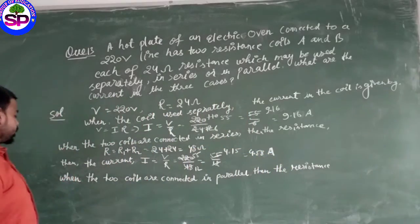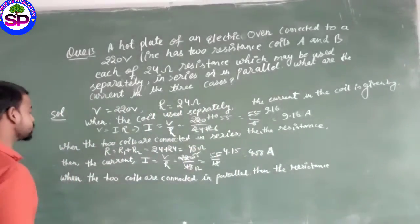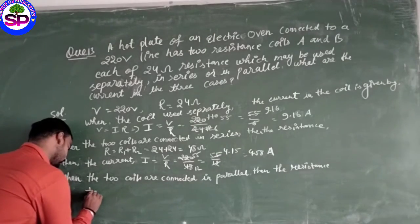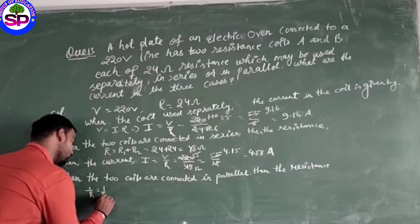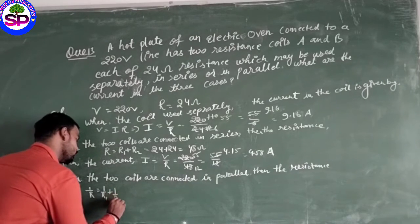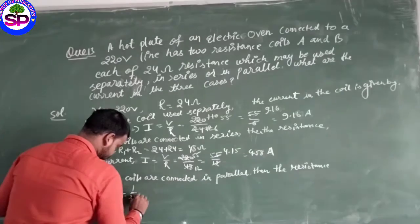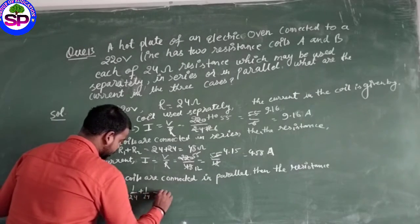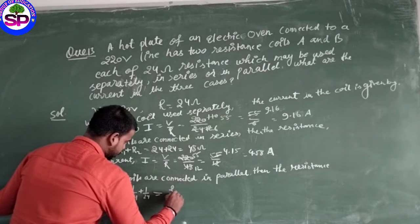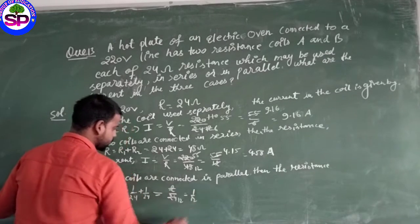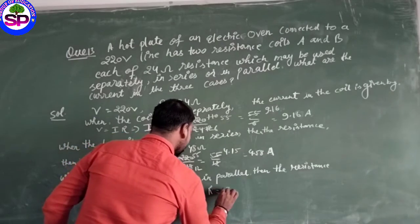The resistance is 1 upon R equals 1 upon R1 plus 1 upon R2, equals 1 upon 24 plus 1 upon 24 equals 2 upon 24, which is 1 upon 12. So R ki value is 12.